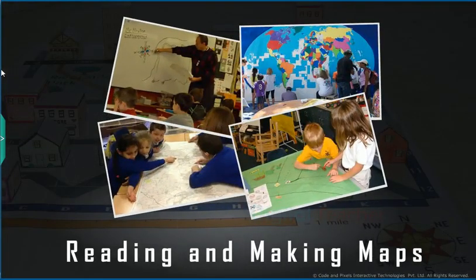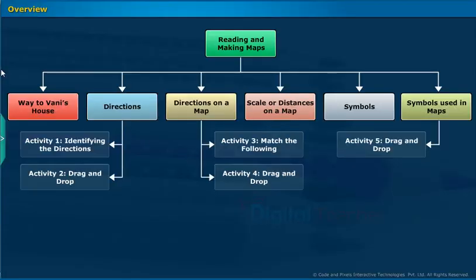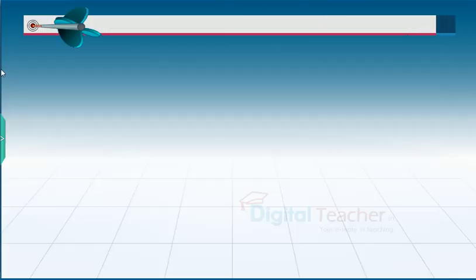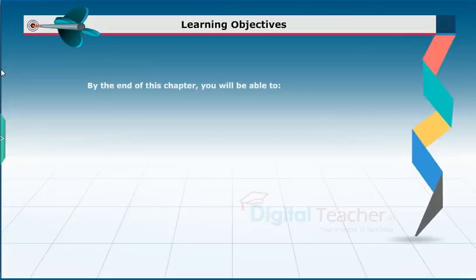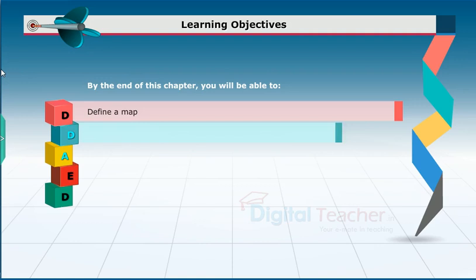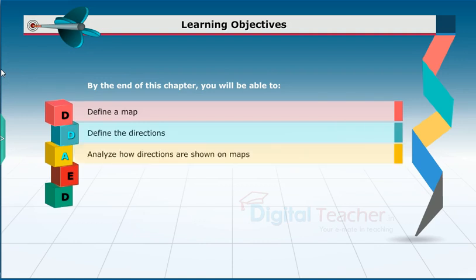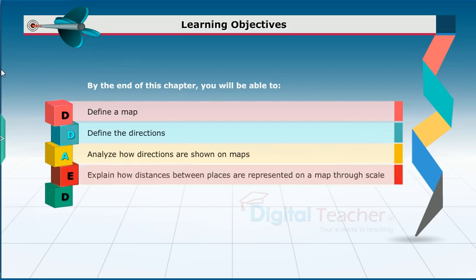Welcome to the chapter 'Reading and Making Maps.' This slide presents an overview of the chapter. By the end of this chapter, you will be able to define a map, define directions, analyze how directions are shown on maps, explain how distances between places are represented through scale, and describe the symbols used in maps.